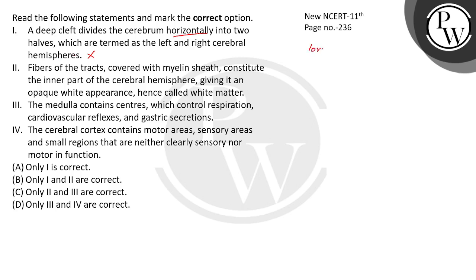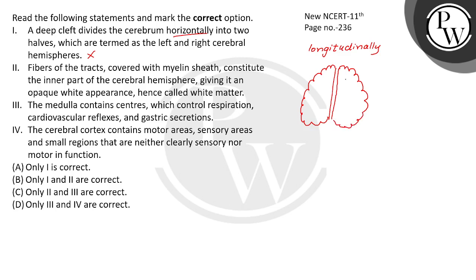How is the cerebrum divided? It is divided longitudinally. Let's show the two hemispheres here. The sulci and gyri are making the surface rough. The right and left cerebral hemispheres are divided, but they are not completely separate from the whole. A structure connects them through a tract of nerve fibers called the corpus callosum.